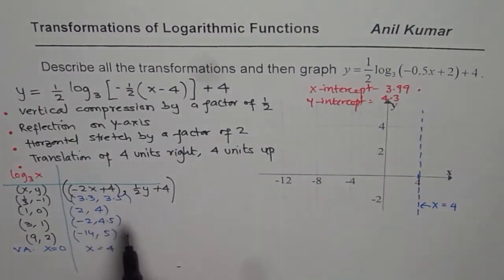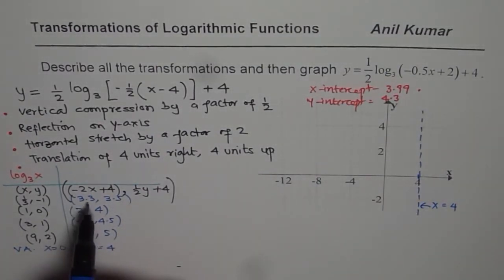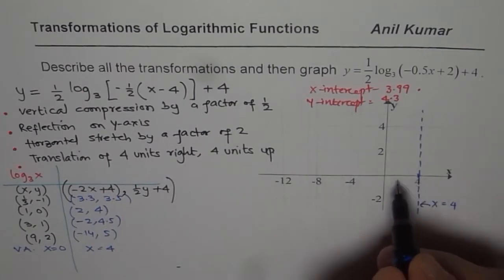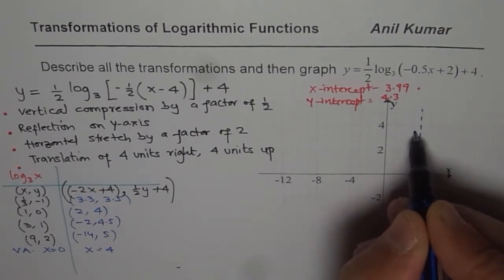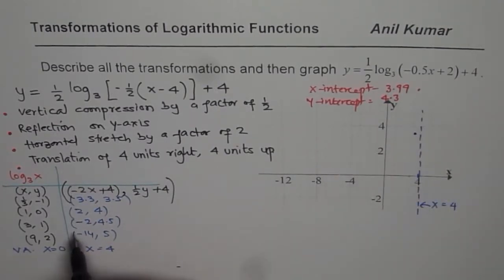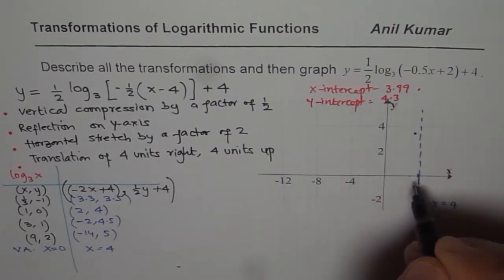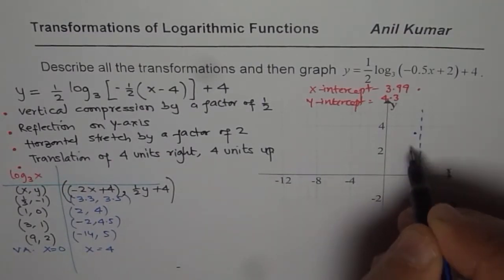Let us plot these points. So we have 3.3, 3.5. So 3.3 is approximately 3 is here, 3.3 is here, 3.5 is 3, kind of here, right? So very close to the vertical asymptote. Then we have 2, 4. So at x equals to 2, we have 4.